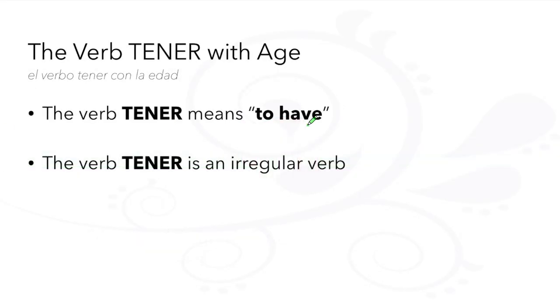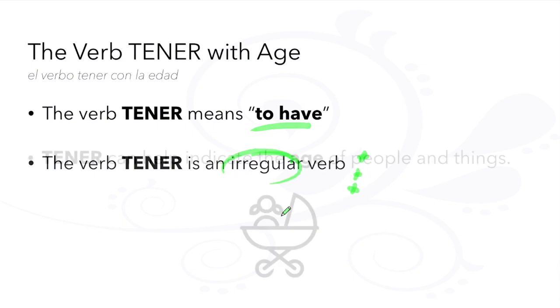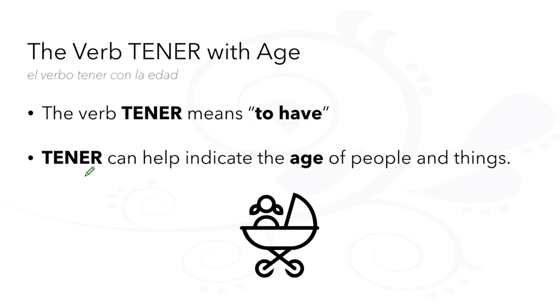The verb tener means to have. It's an irregular verb, so watch out for spelling changes when we conjugate. The verb tener is used to indicate the age of both people and things.